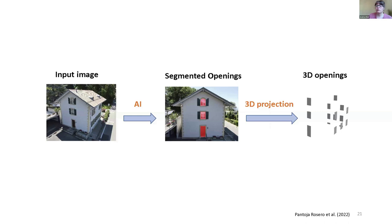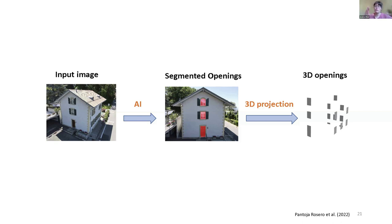Now we have our segmented openings, and if we know something about the camera location — in this case we have multiple images of the same building — we can use photogrammetry. If you know where the object is in different images, and you know the real world coordinates, location, height, angle, and orientation of the camera, you can use that to bring the objects in the images into 3D space. That's how we can bring those windows and doors we've identified into 3D space.